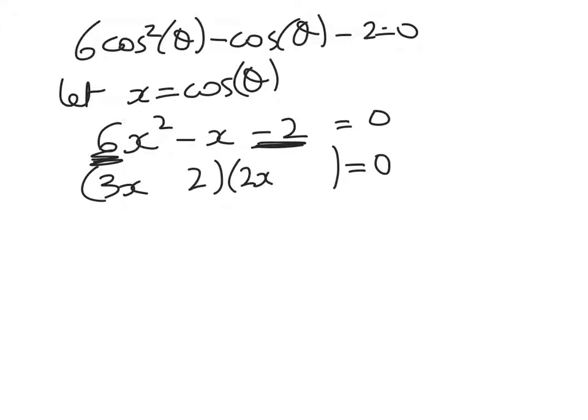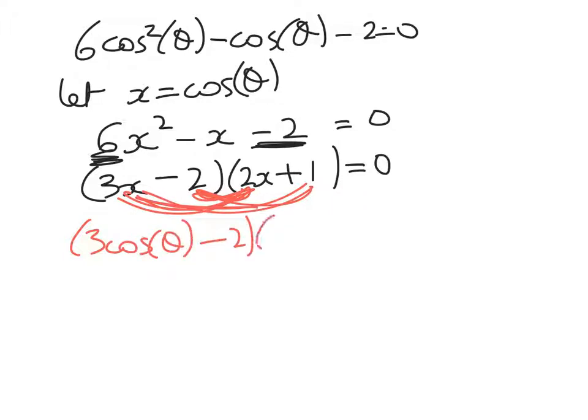So try a 2 here and a 1 here. Well, I need to have minus x, so that's going to give me -4x there plus 3x. That looks pretty good. Expanding it out to check, I get 6x² - 4x + 3x - 2. So that's all good, and now we're going to write it back in with cos of theta. So we get (3cosθ - 2)(2cosθ + 1) = 0.